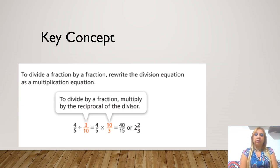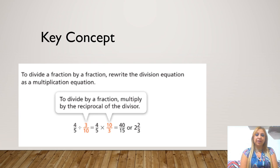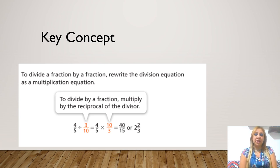You are going to keep the first fraction, flip the second fraction — you put it upside down — and change the division sign to the multiplication sign. Then you multiply as usual: multiply the top numbers, multiply the bottom numbers, then simplify if needed.